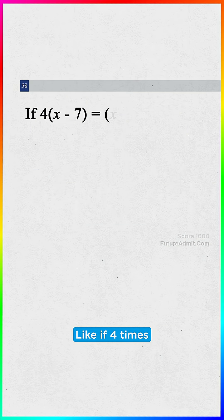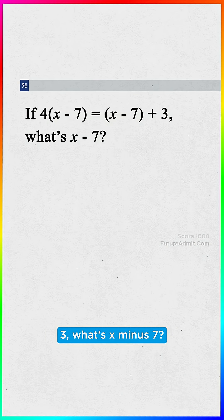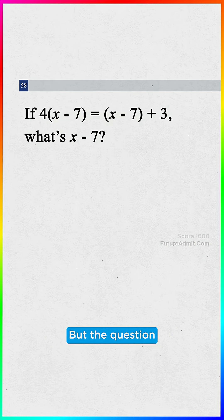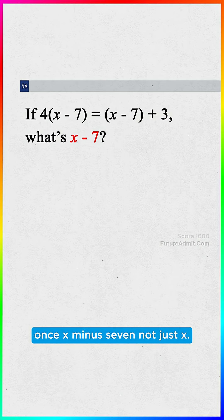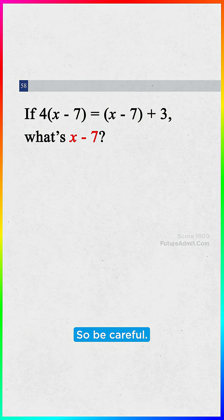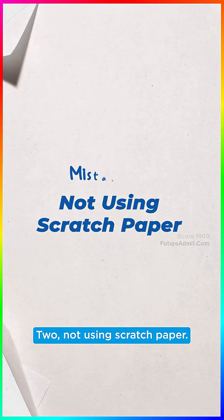For example, if 4 times X minus 7 equals X minus 7 plus 3, what's X minus 7? Most will just find X and move on, but the question wants X minus 7, not just X. So be careful — always double check what they're actually asking for.